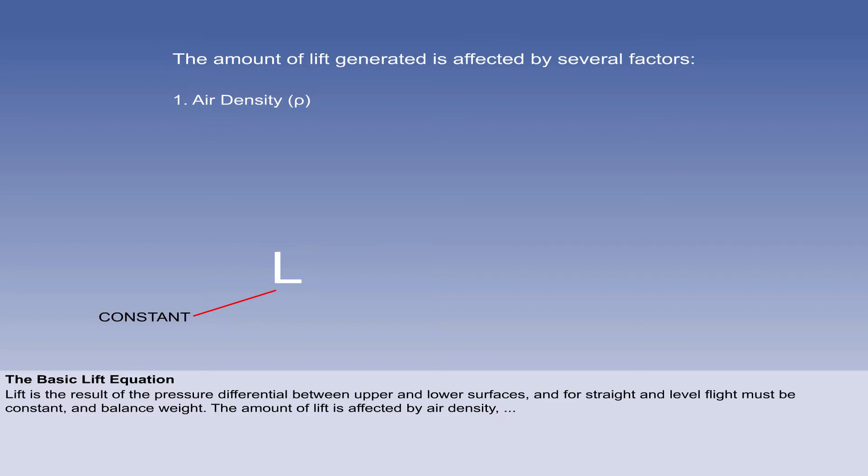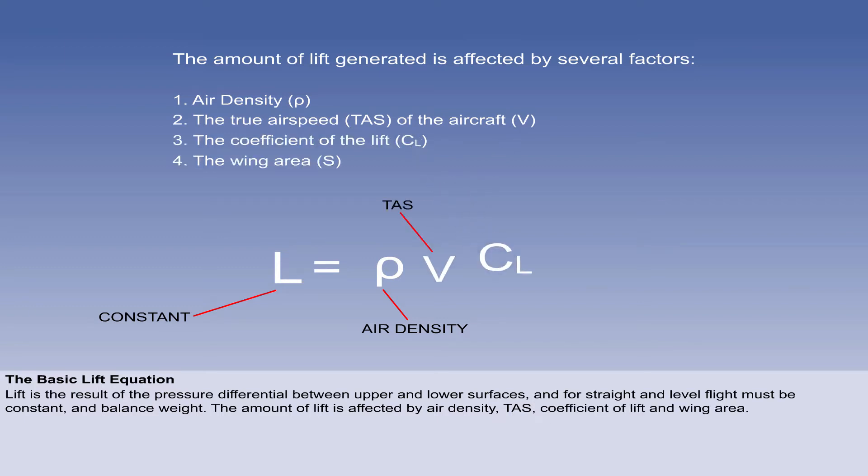First, air density, denoted by the symbol rho. Next, the aircraft's true airspeed, or TAS, enters the equation as V. The next factor is the coefficient of lift. The final factor is the wing area.